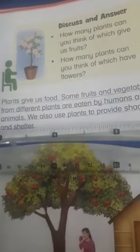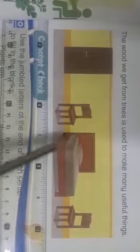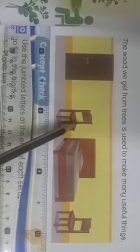Now come to the next page, that is page twenty-nine. The wood we get from trees is used to make many useful things. Look at this picture — door, chair, bed. These are wooden materials. Wood we get from the trees, and it is used to make many useful things.